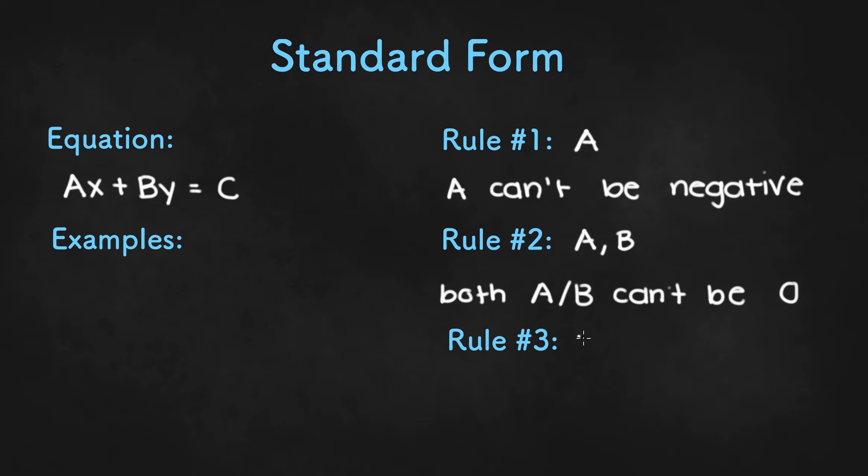Last but not least, rule number three is related to all three: A, B, and C. It basically states that A, B, and C all have to be integers and there are no fractions or decimals in standard form. So we can't get something like negative 3 halves x or 2 thirds y.